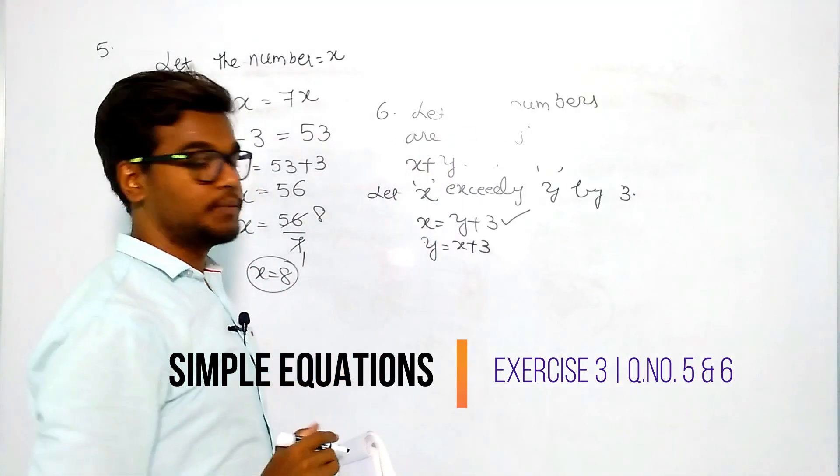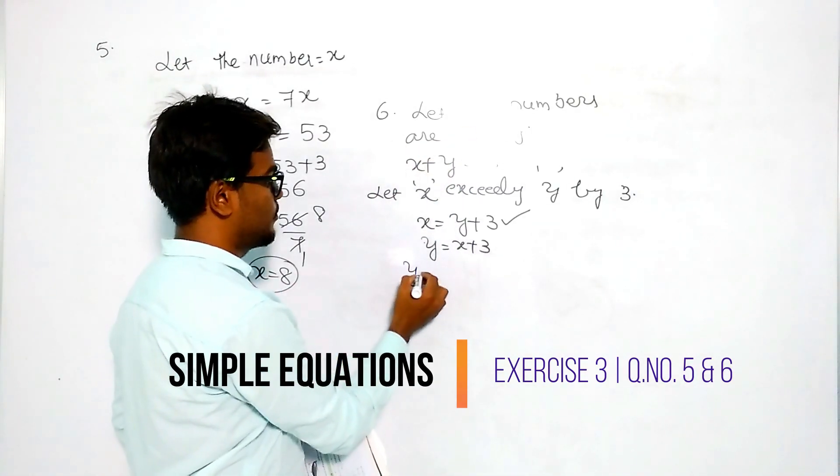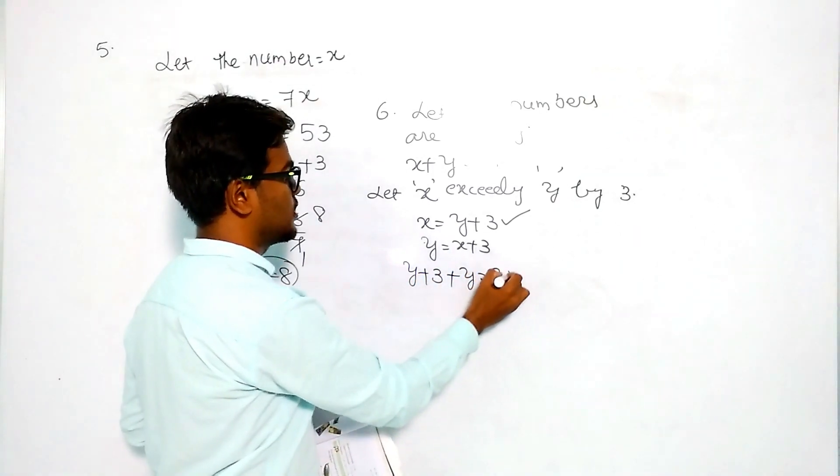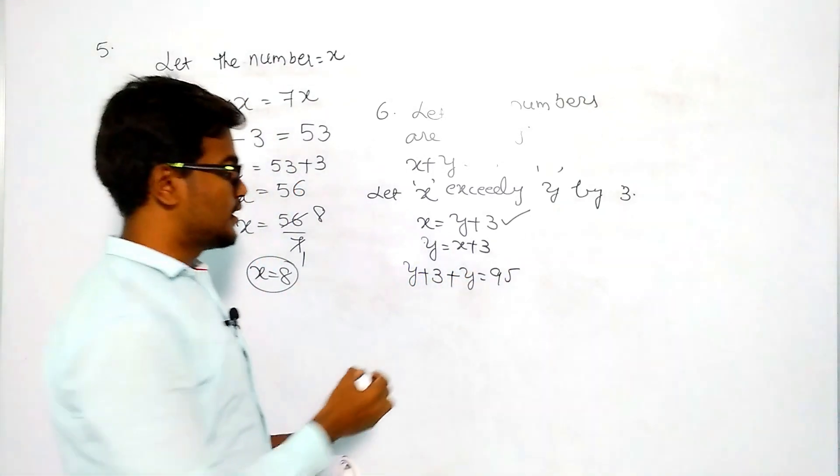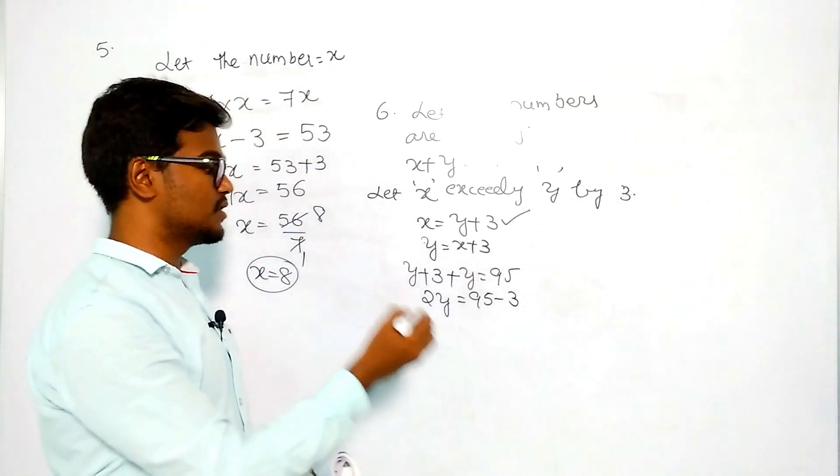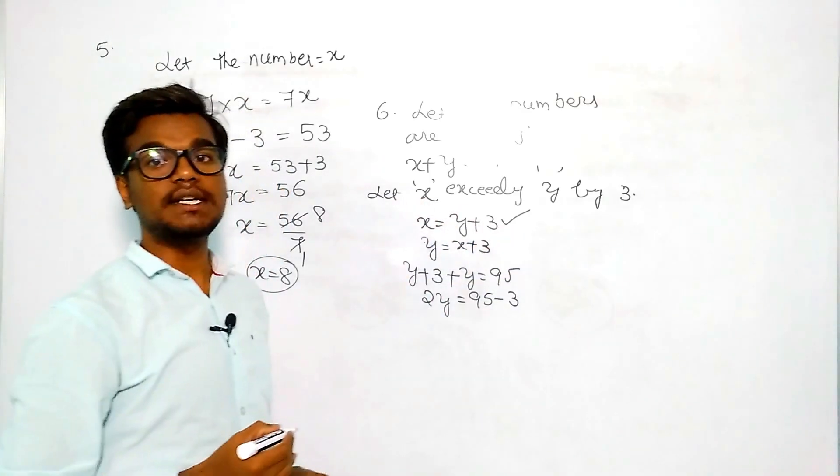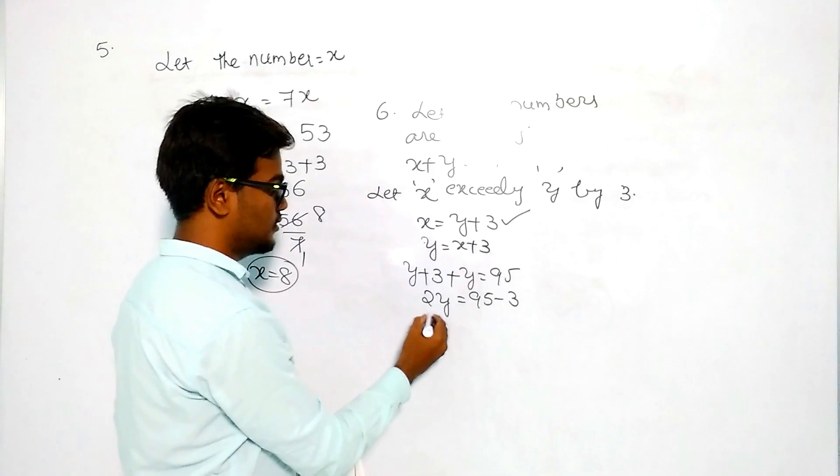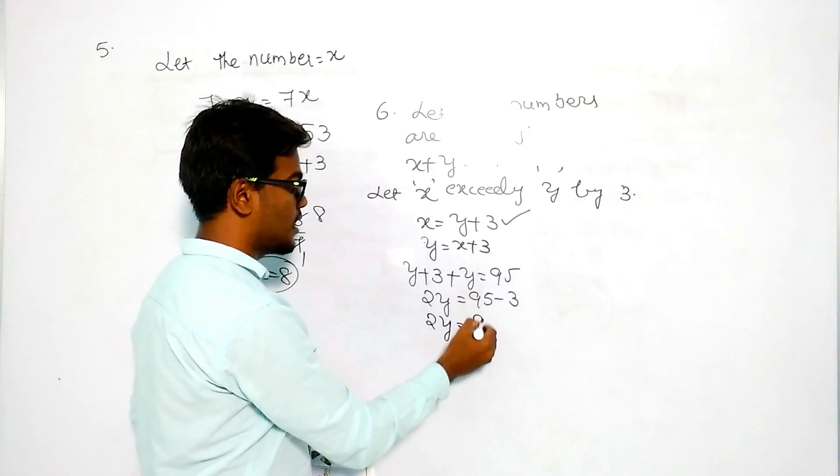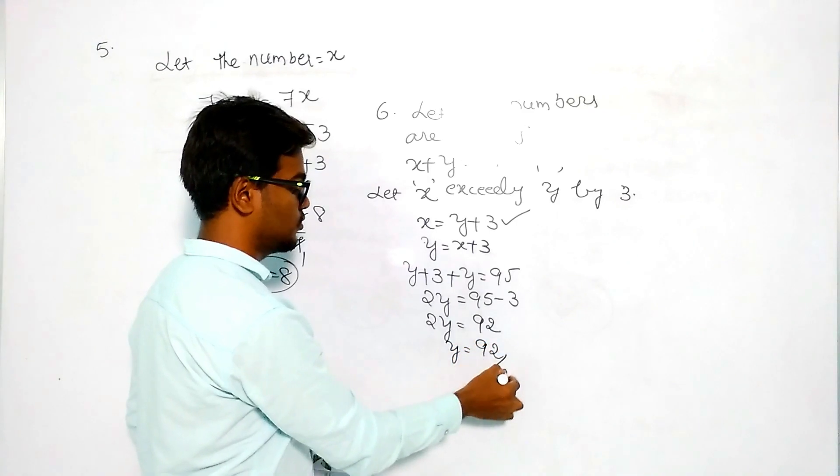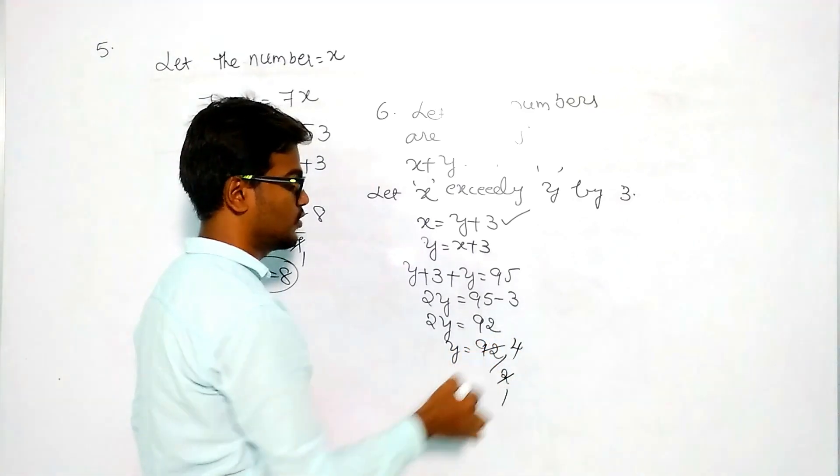y plus 3 plus y equals 95. Then 2y equals 95 minus 3, because we are shifting this 3 to the right side and it becomes minus 3. Then 2y equals 92.